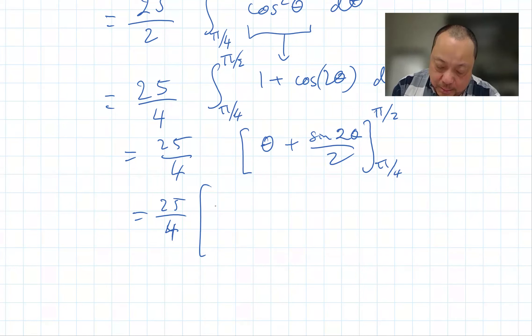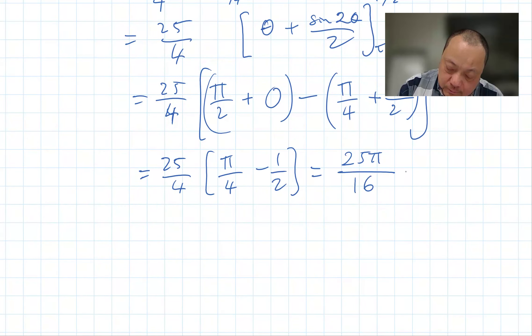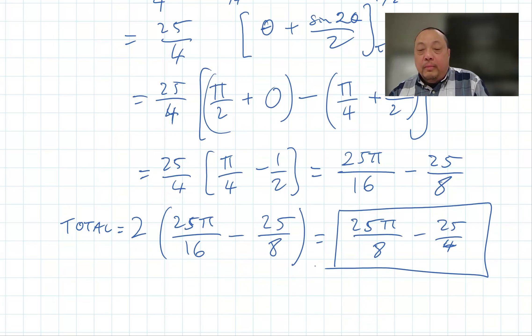This time I don't have a bunch of zeros, so I have to be careful. Pi over 2 plus sine of 2 times pi over 2 is sine of pi. And sine of pi over 2 is equal to 1. And so the total is equal to two times this. And so I get the same answer.